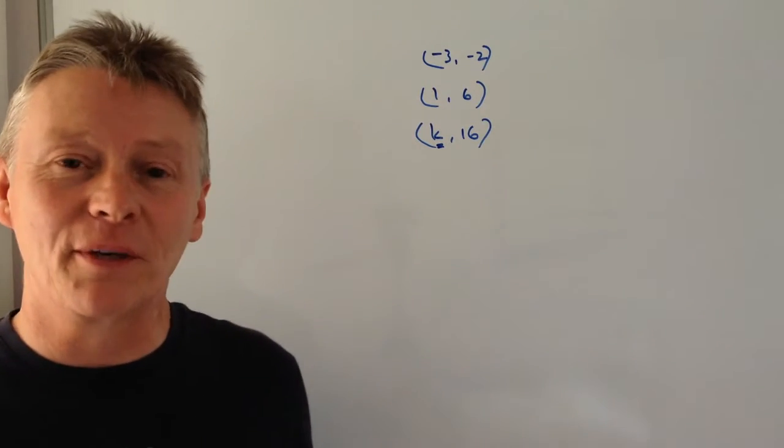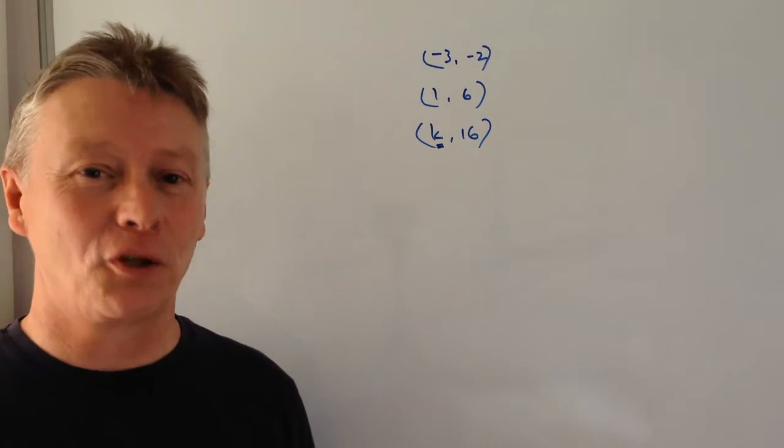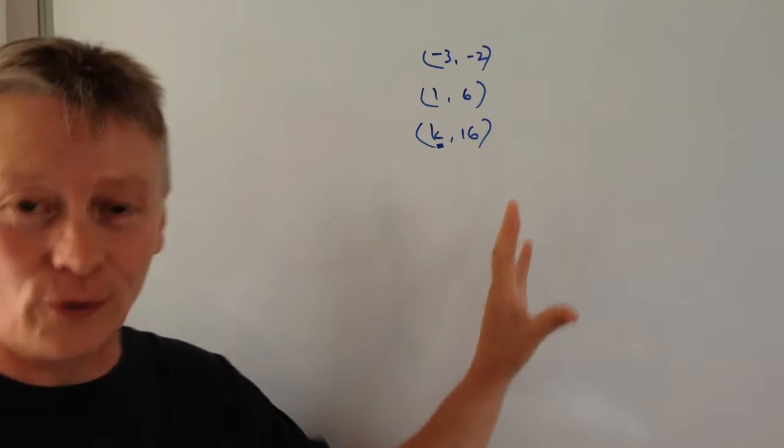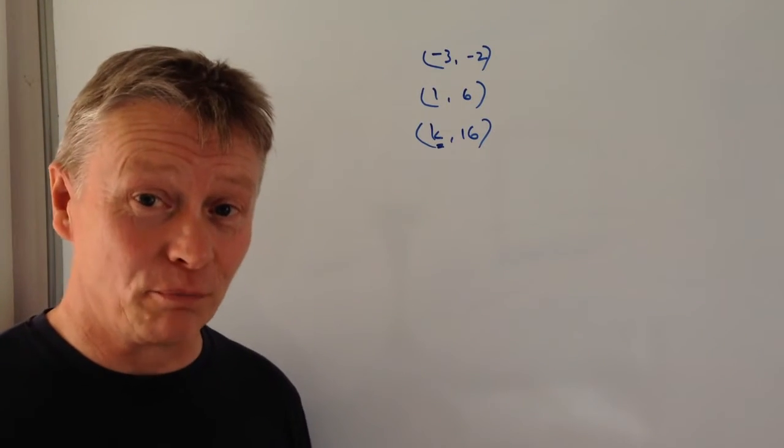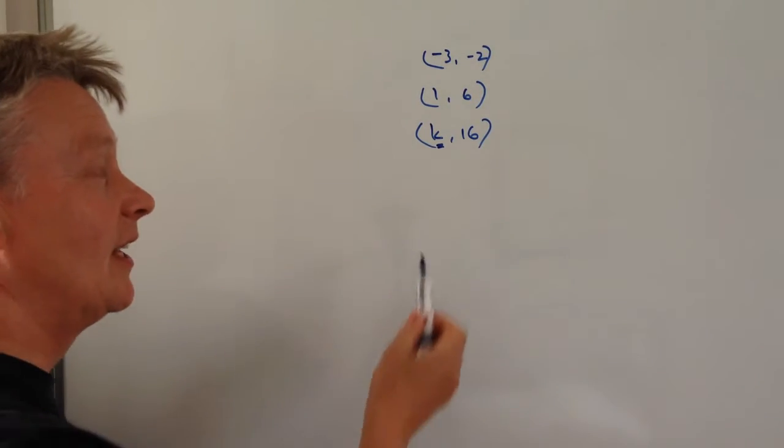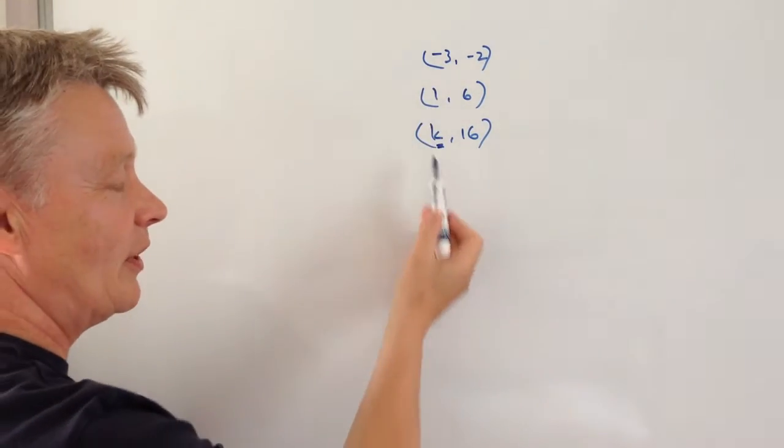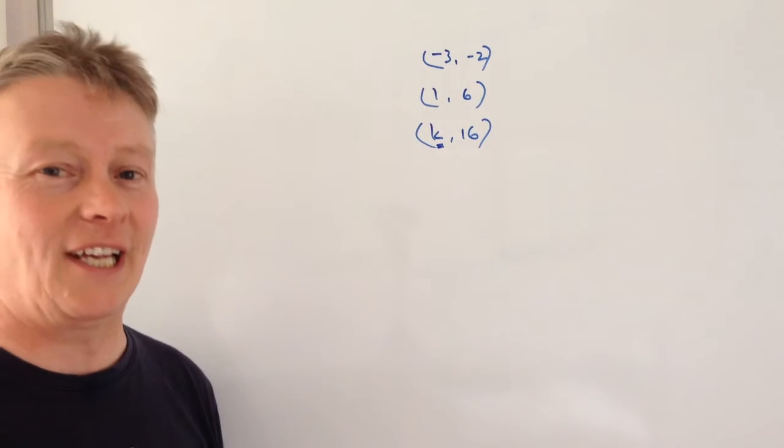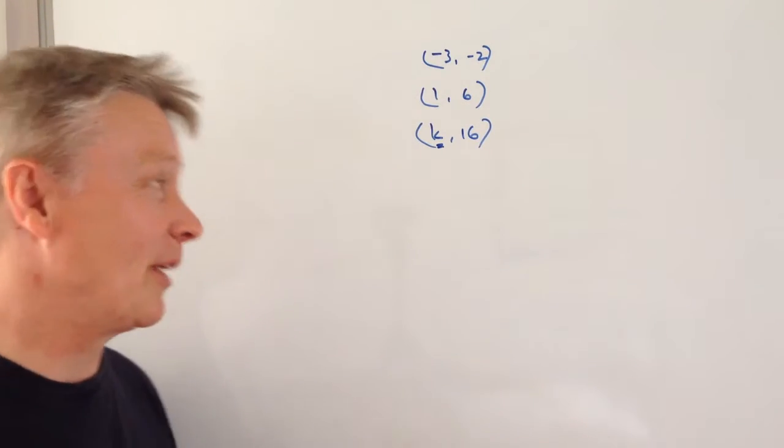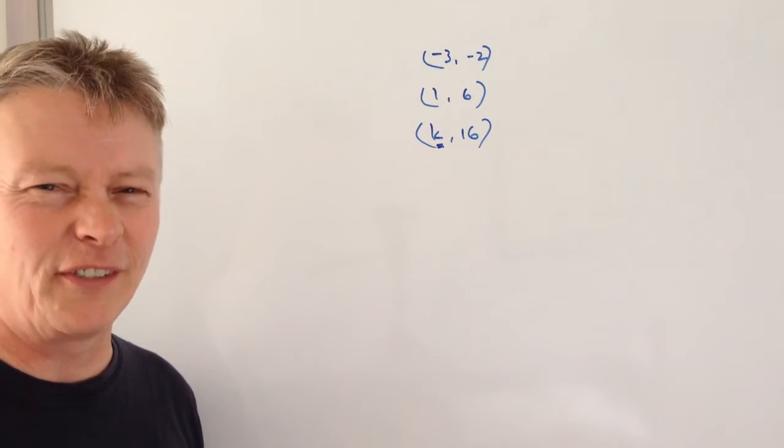Hi, in this video we're going to be looking at straight line graphs. I'll write the whole question in the description below, but basically we're told that it's a straight line that passes through these points, one of which is called K,16, and we're being asked to work out the value of K.